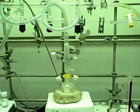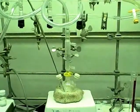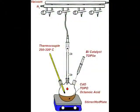The synthetic setup looks something like this. First, you start with a Schlenk line, a three-neck flask, a high-boiling solvent like tri-octyl phosphine oxide, a metal precursor such as cadmium oxide, and a fatty acid like octanoic acid.